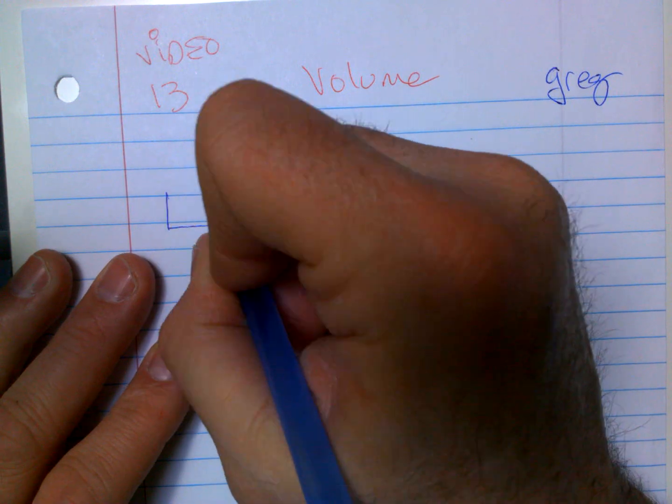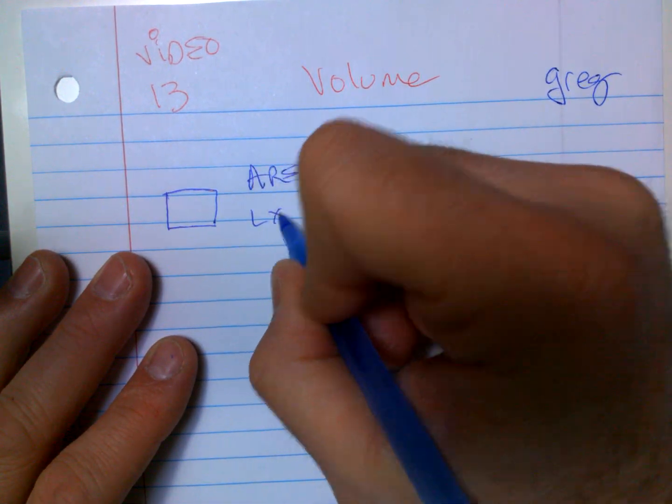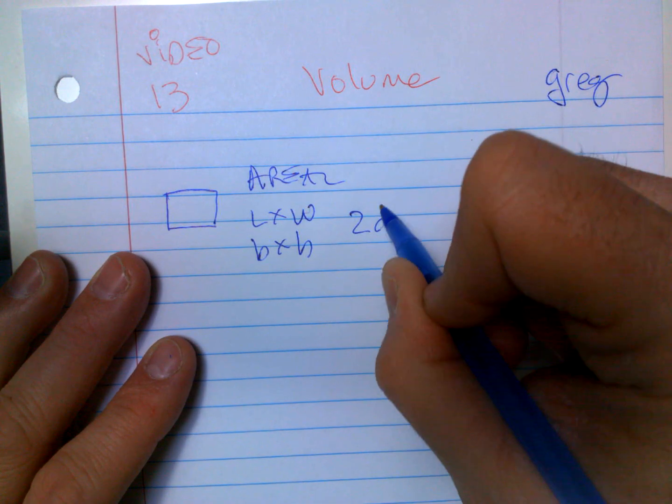So area is a two-dimensional object. Area, length times width, base times height. It's two-dimensional.